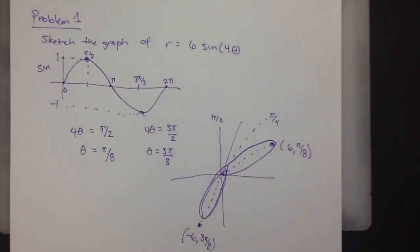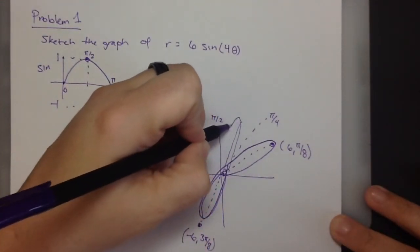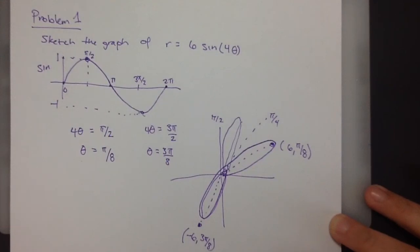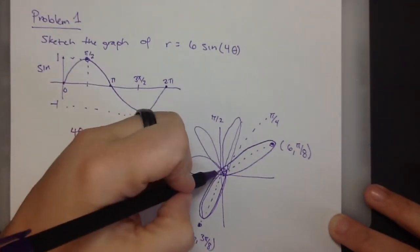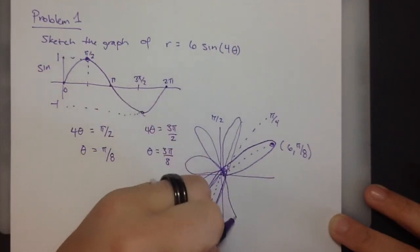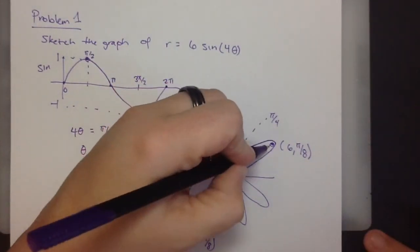If you keep going around, you're going to get, basically, 2 petals in each quadrant, like this. And so, we have a total of 8 petals, and the length is 6.